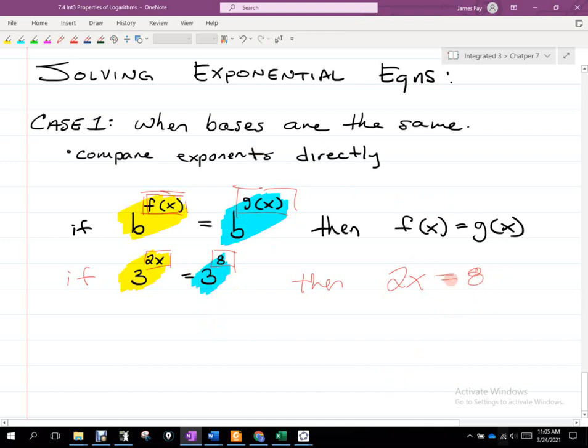Does that let you solve for x now? What's x got to be? So I divide both sides by 2, I should get x to be 4. And now think about this. If I put 4 in, you would have 3 raised to the 2 times 4. What's 3 to the 2 times 4? It's 3 to the 8. Does that make 3 to the 8 equal to 3 to the 8? Yeah. So that's how we solve exponential equations when the bases are the same.